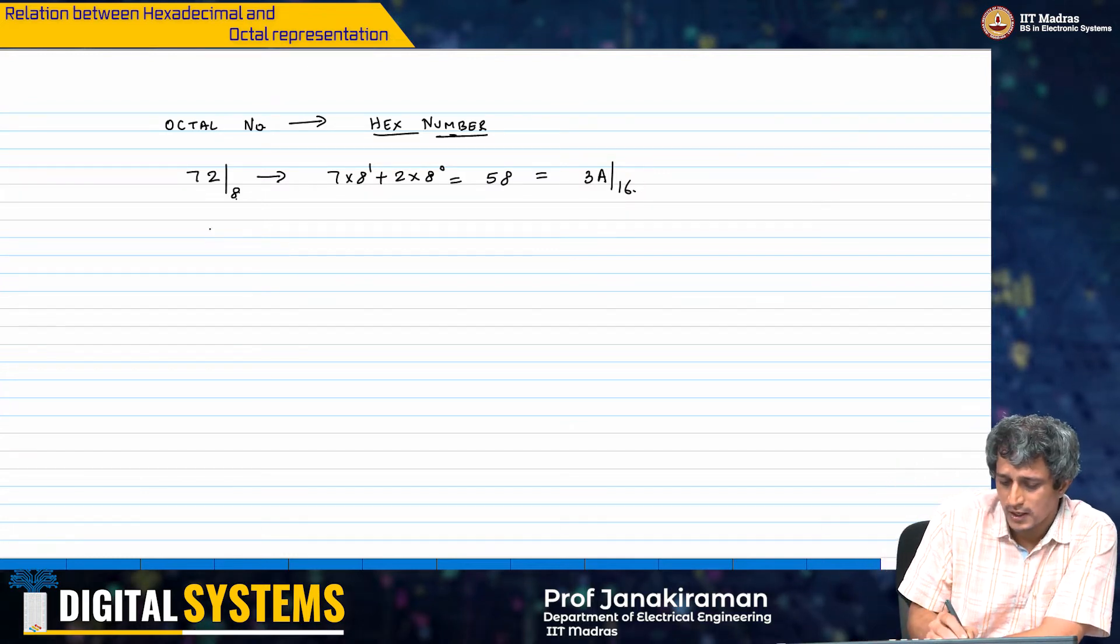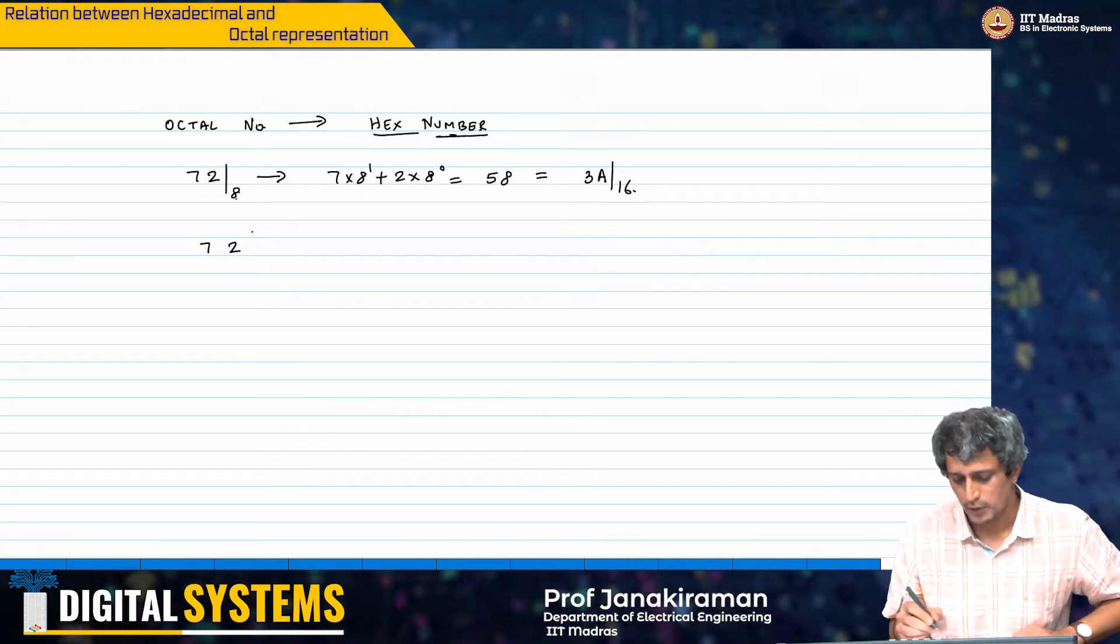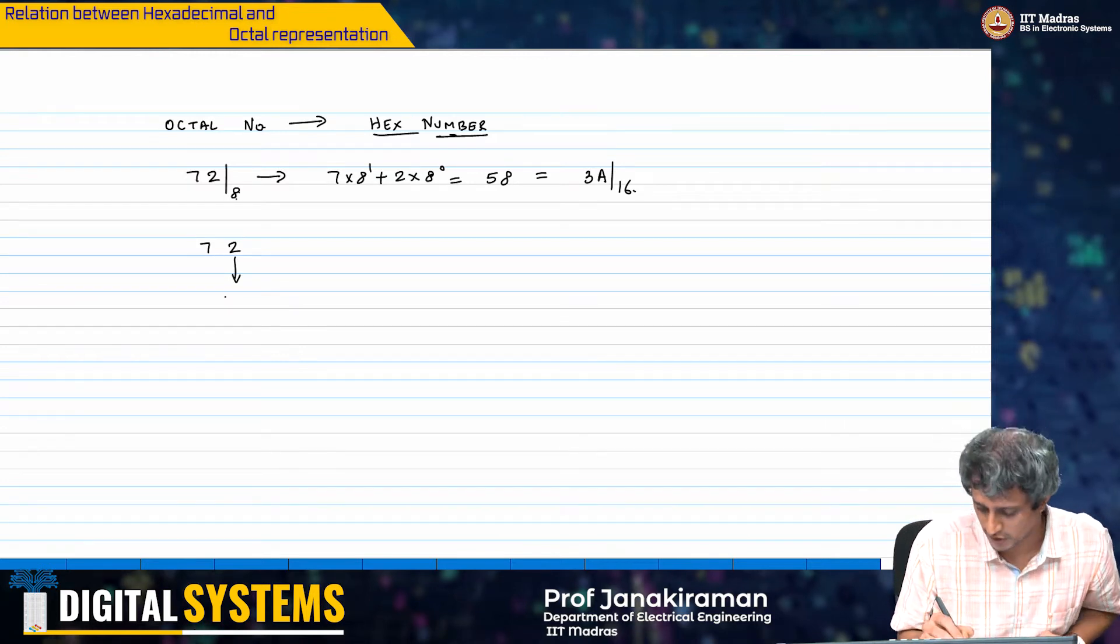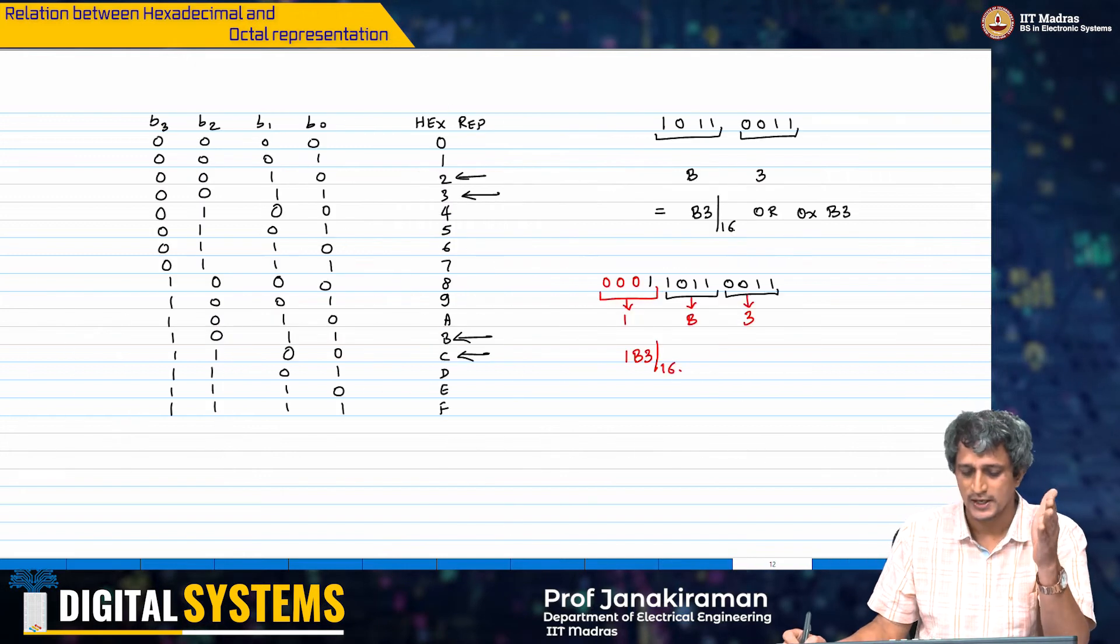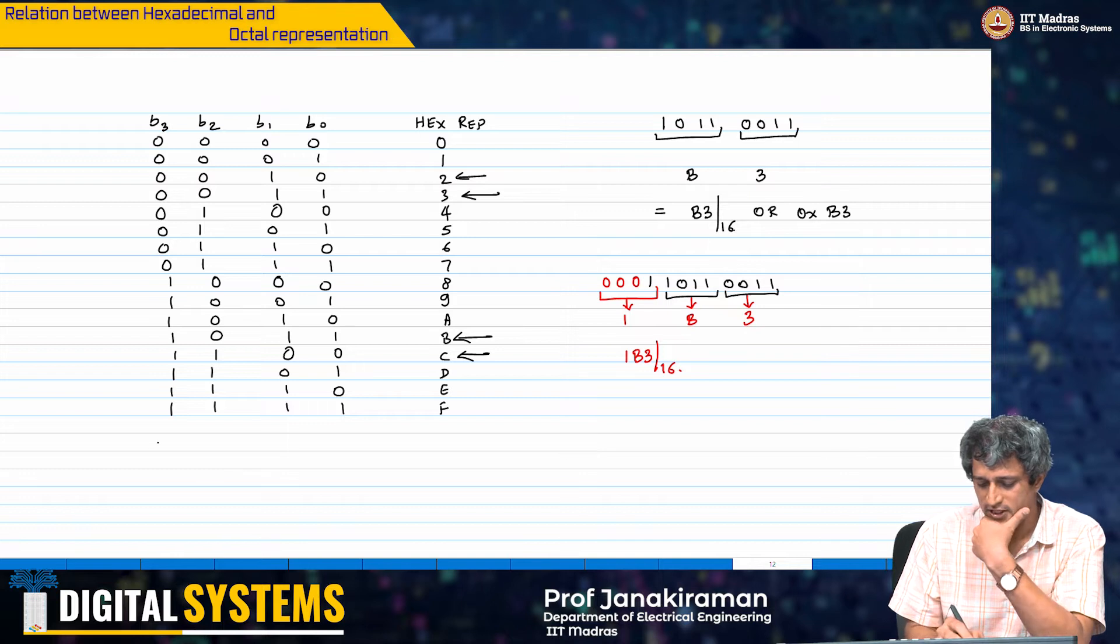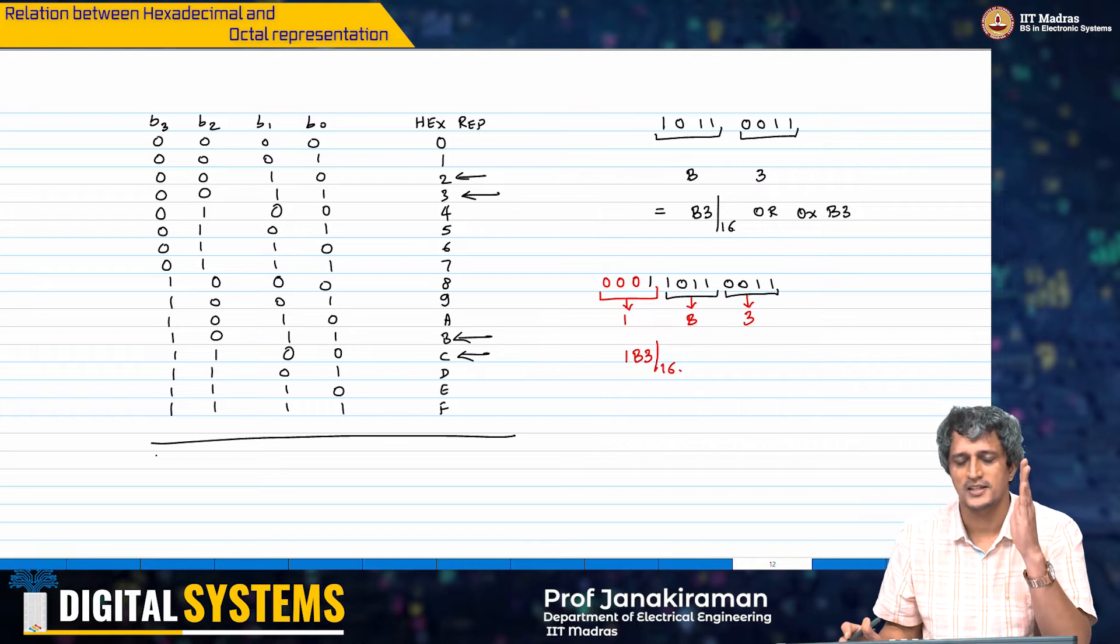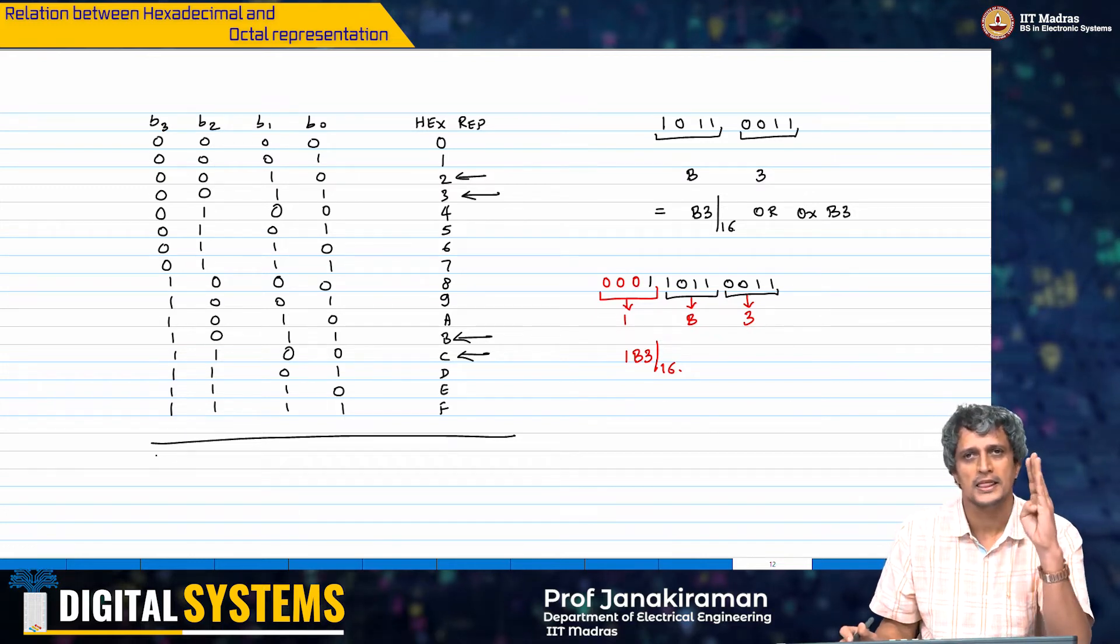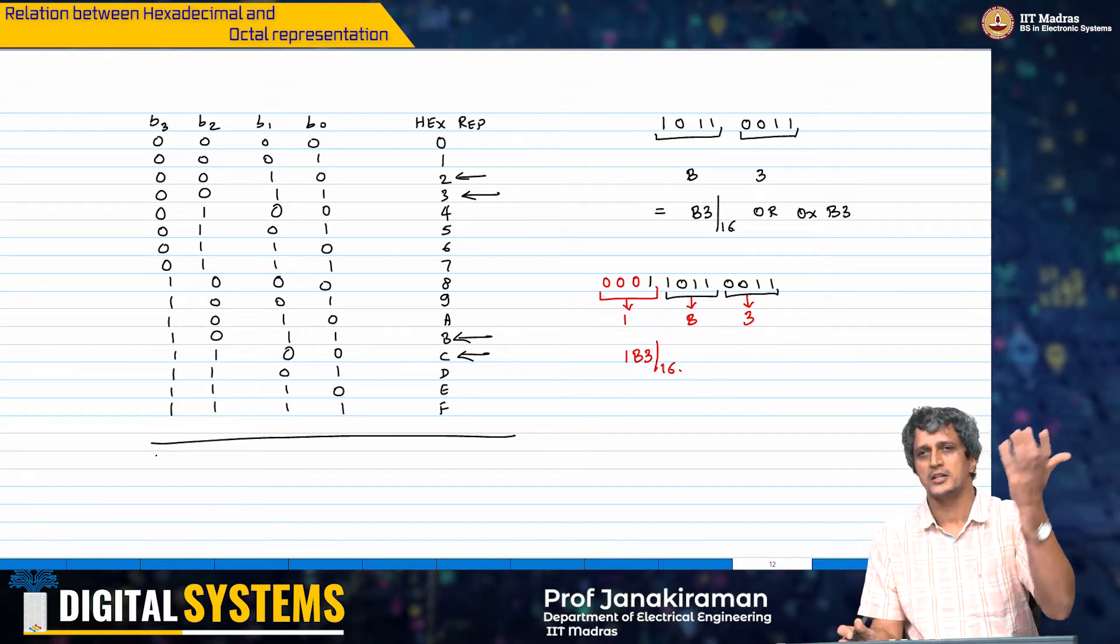Now what you can do is, instead of this, you can take 72 and simply write out the binary value of this. One very important thing to do is to by-heart this table here that I have written. This table is very critical.